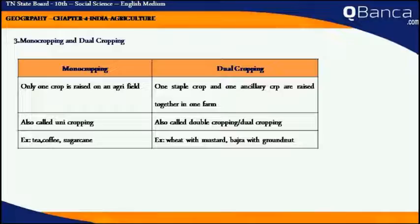Examples of dual cropping include wheat with mustard, and bajra with groundnut.